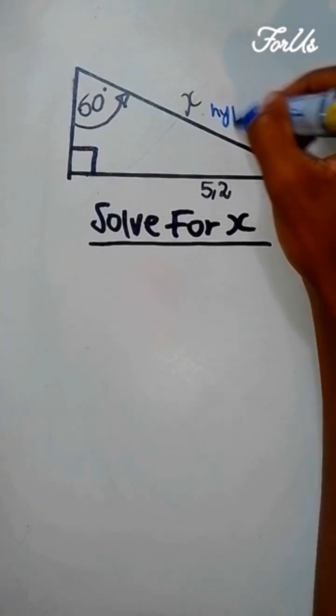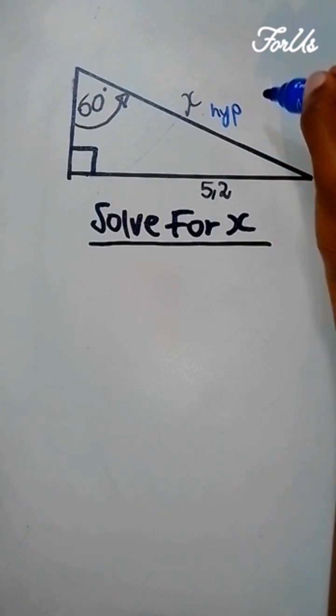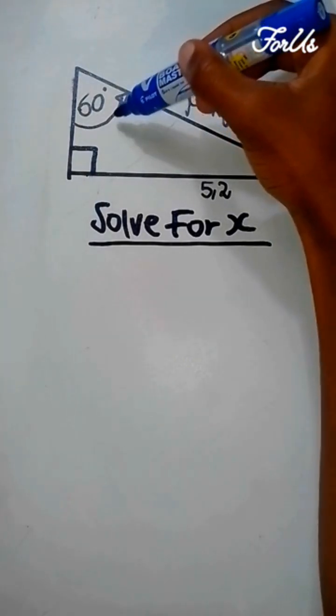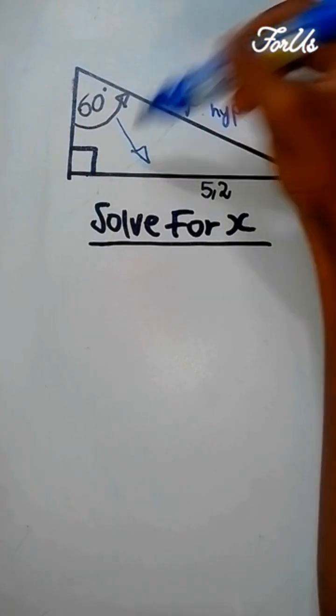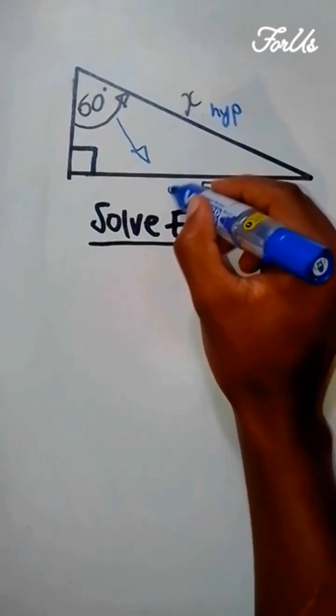Here it's going to be hypotenuse, then the side opposite to this angle of 60 degrees, this side is going to be opposite.